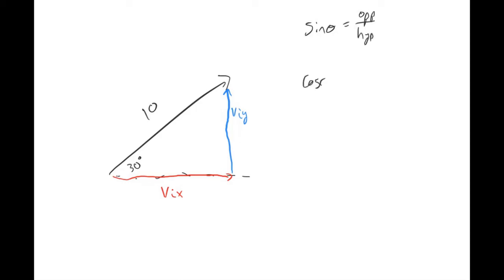Sine of theta is opposite over hypotenuse and cosine of theta is adjacent over hypotenuse. And so if we look at this triangle and the angle 30 degrees, the side opposite to the 30 degrees is the initial y, the hypotenuse is 10, and the angle was 30 degrees. And then the adjacent side was the x component of velocity, the hypotenuse again was 10, and the angle was 30 degrees.